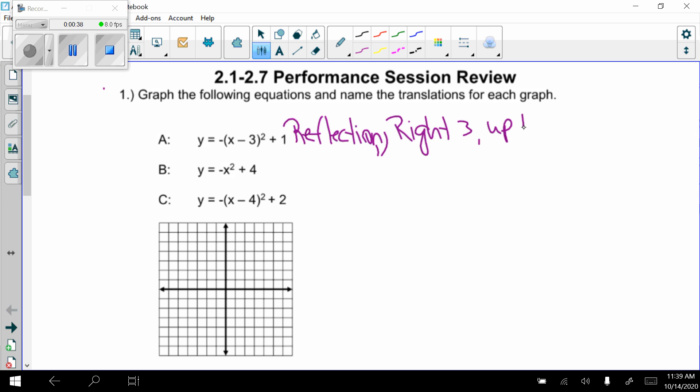B, y equals negative x squared plus 4. Again, the negative tells me I have a reflection. It doesn't go left or right any, but it goes up 4.